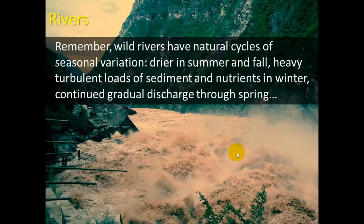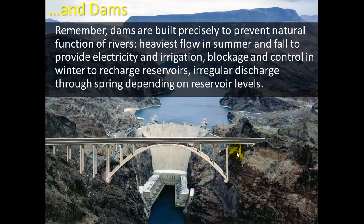Wild rivers have natural cycles of seasonal variation — drier in the summer and fall, with heavy turbulent loads of sediment and nutrients in the winter from big storms, and continued gradual discharge through spring. However, dams are built precisely to prevent the natural function of rivers. In summer, the heaviest flow is used to create electricity to power air conditioners and other energy needs. In the winter, when nature expects fast flow, we're blocking it to store water for summertime — and that really messes with the natural habitat.